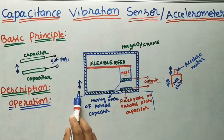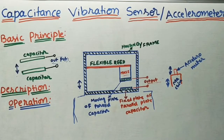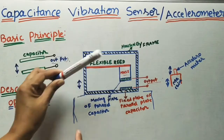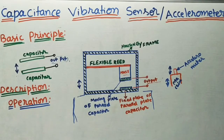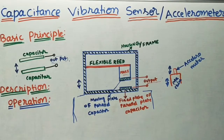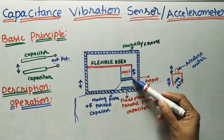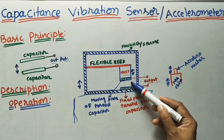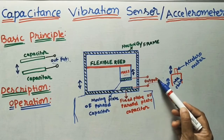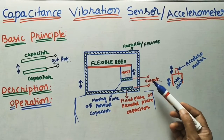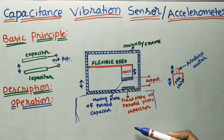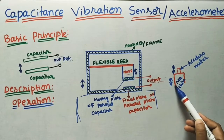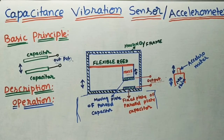As the frame moves up and down due to machine vibration, the flexible reed — which is a thin plate with one end connected to the frame — will also vibrate with the frame. Because of the movement of the reed, the mass will also move up and down, and the moving capacitor fixed at the mass will also move. The change in distance between the two capacitors changes the capacitance, and we can see this change in capacitance at the output in terms of voltage. This output voltage indicates and measures the vibrations of the machine.